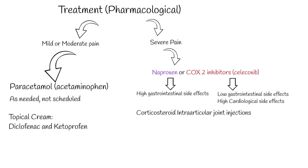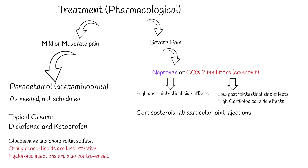Corticosteroid intra-articular joint injections can also be an effective treatment for osteoarthritis, especially in a setting of acute pain. Glucosamine and chondroitin sulfate may help. Oral glucocorticoids are less effective, and hyaluronic acid injections are also controversial.